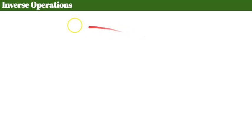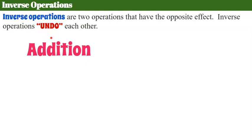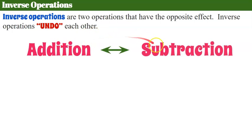Now that we have modeled this with algebra tiles, let's move along and start solving them using an algebraic method. We need to understand inverse operations. Inverse operations are two operations that have the opposite effect — they undo each other. Much like we were making our zero pairs, what we were really doing is understanding that addition and subtraction are inverse operations that undo each other.